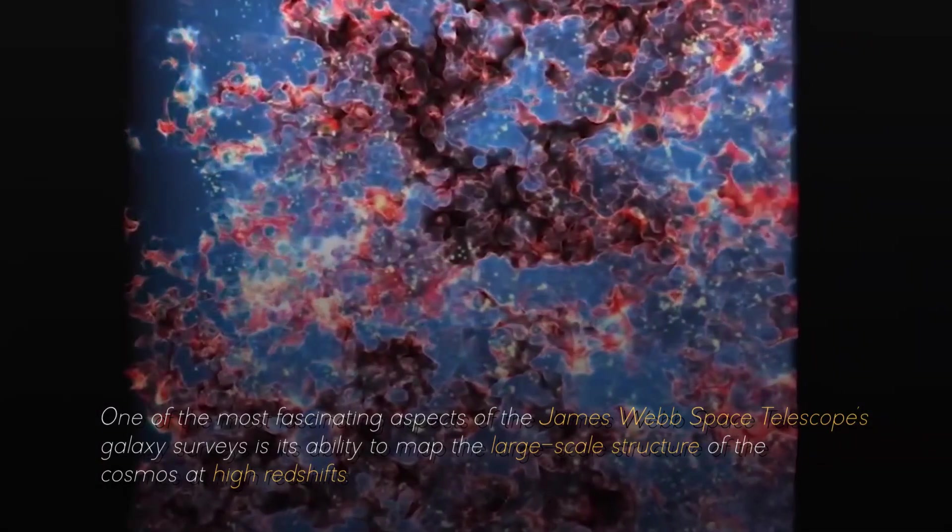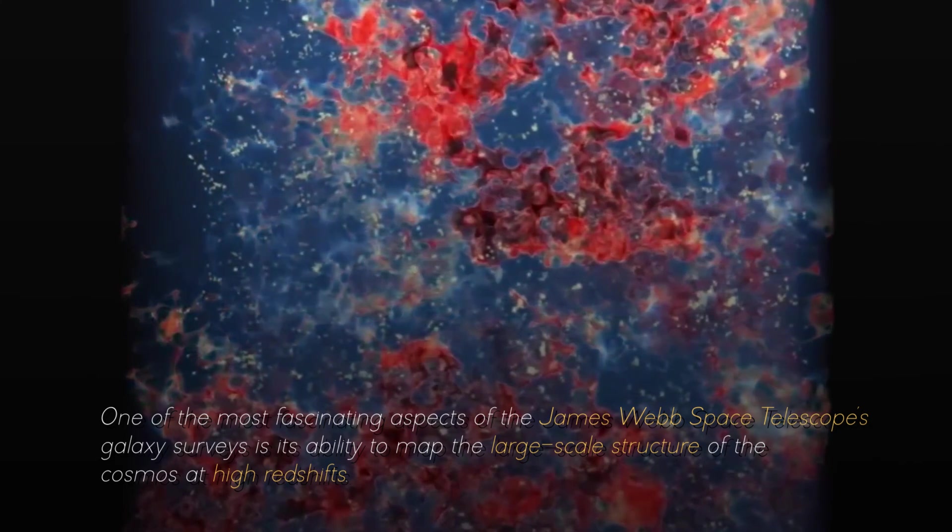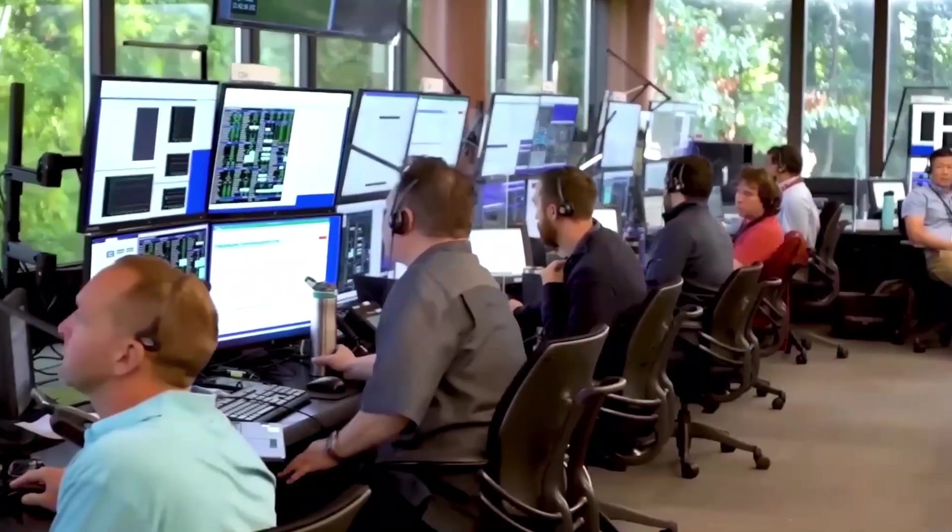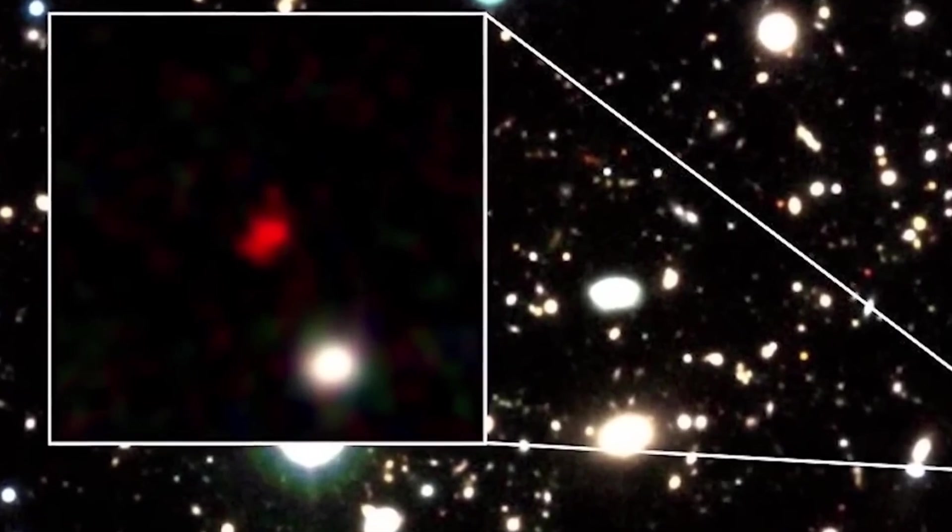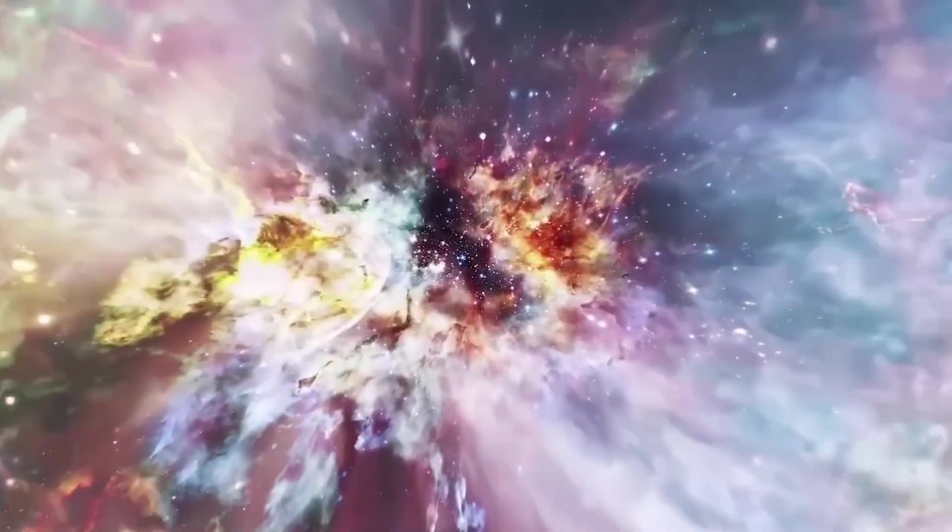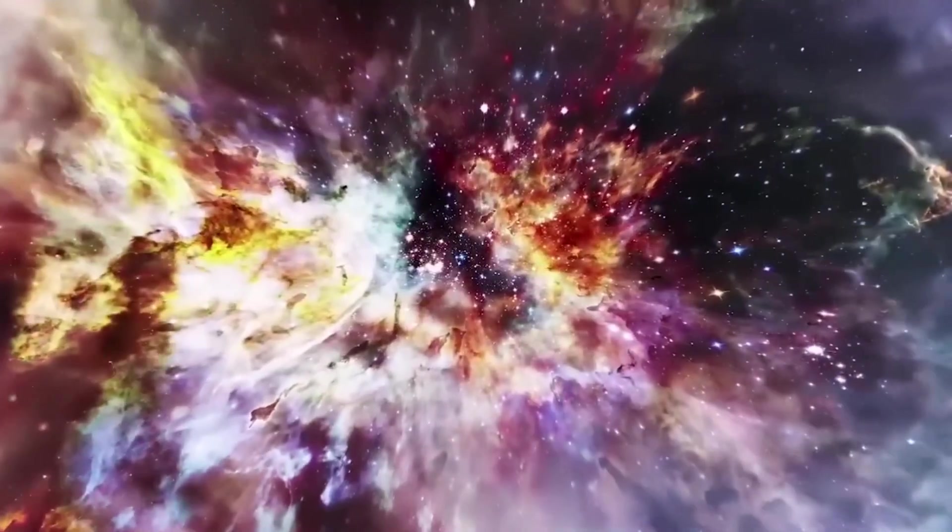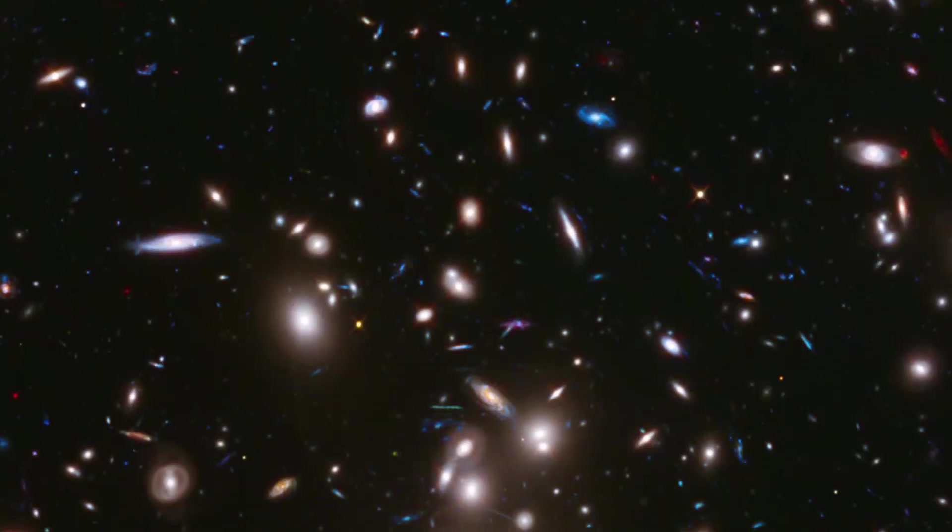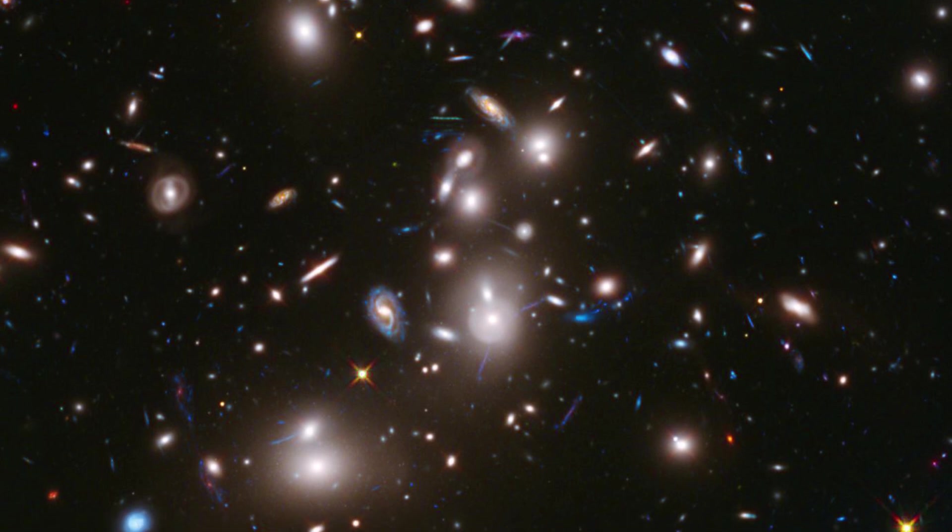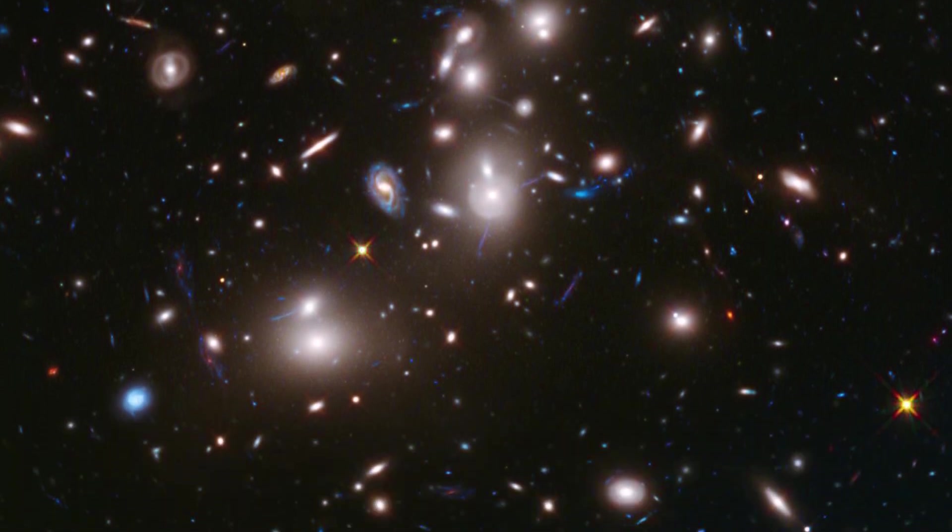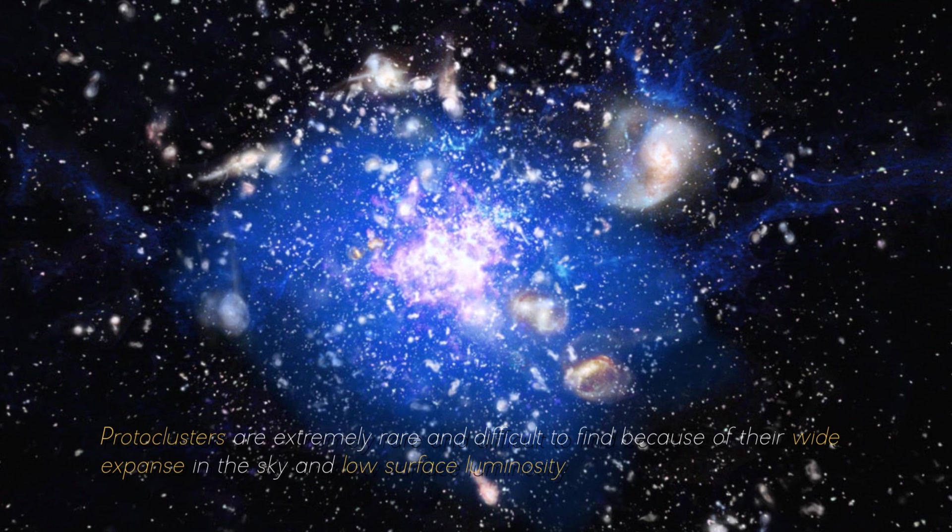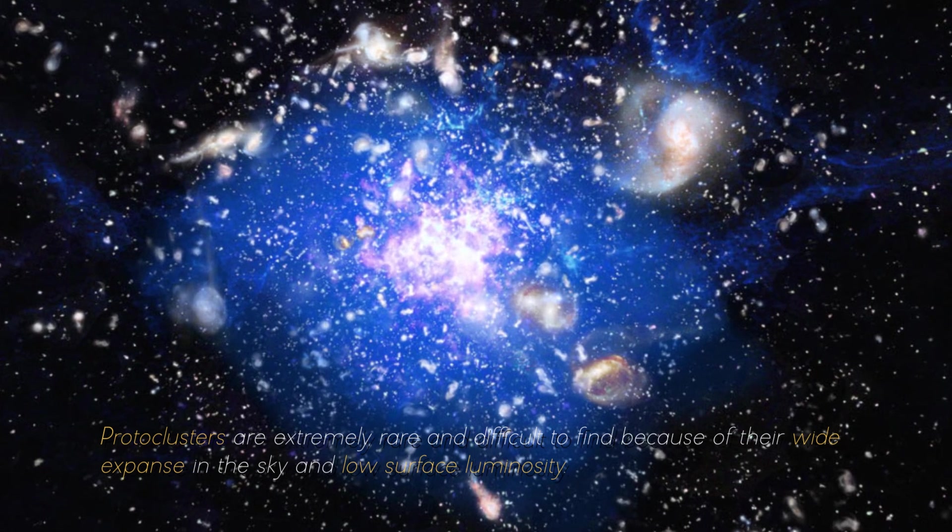One of the most fascinating aspects of the James Webb Space Telescope's galaxy surveys is its ability to map the large-scale structure of the cosmos at high redshifts, when galaxies were still young and grouped into large clusters known as protoclusters. These protoclusters are the predecessors of today's galaxy clusters, which are the largest gravitational structures in the universe. By studying these protoclusters, we can learn about the interactions between galaxies, their interactions with their surroundings, their growth and merger, and how they influence the formation of stars and planets.